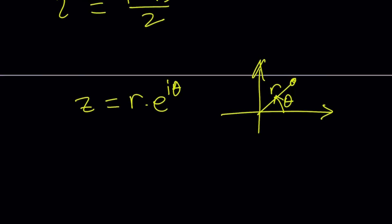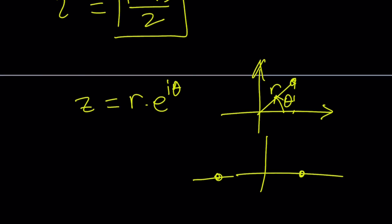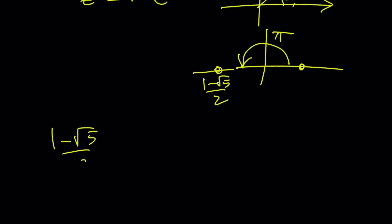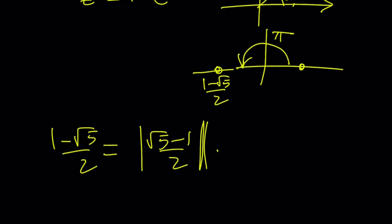Our number 1 minus root 5 over 2 is a real number with zero imaginary part, so it lies on the x-axis. Since it's negative, it's on the negative side, and its angle is pi radians. The modulus r is just the absolute value, which is root 5 minus 1 over 2 (the positive version). So we can write it as the absolute value of root 5 minus 1 over 2, multiplied by e to the power i times pi. You can also add 2n pi for all the branches.